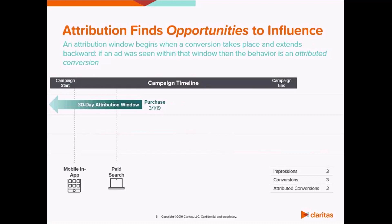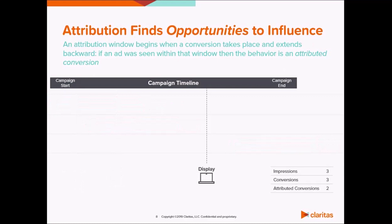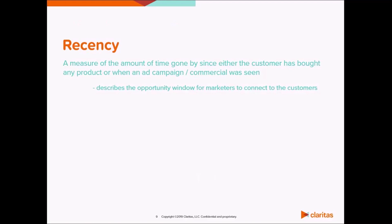Let's look at another scenario. We see a display ad that doesn't actually fall within an attribution window. Although it might contribute to the long-term impact of an ad, we can't assume that it has a short-term influence. Highlighting this point are the concepts of recency and relevance. Recency ensures that we're not attributing a conversion to an exposure that occurred a year ago — if you're exposed to an ad today and then make a purchase 12 months from now, it's likely that exposure didn't have any influence on that purchase.